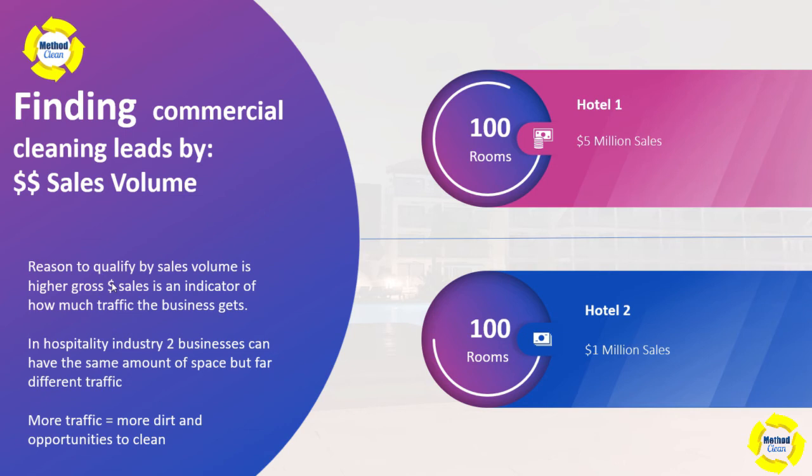If you think about it practically: if one restaurant has a thousand customers a month and another has five thousand customers a month, the five-thousand-customer restaurant is going to have a lot more traffic. They are going to need a lot more cleaning than the restaurant with a thousand customers a month. That's the concept, but there's no direct way for us to measure that.